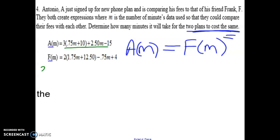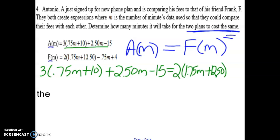Let's take Antonio's expression of three parenthesis 0.75m plus 10 plus 2.50m. Will I have enough room? Certainly hope so. Equal to, now Frank's turn, two parenthesis 1.75m plus 12.50, let me get that decimal point in there, minus 75 cents, just out of room. I'll put it a little bit underneath, and then the four. So that's just rewriting both expressions as an equation so we can solve this.